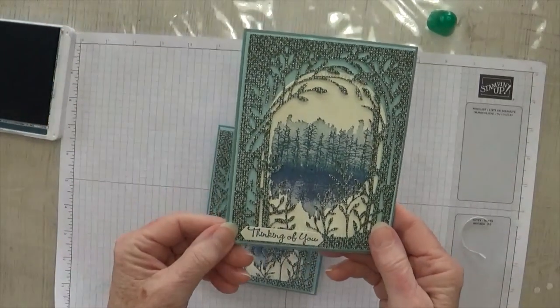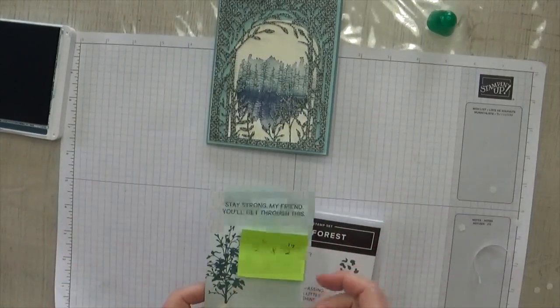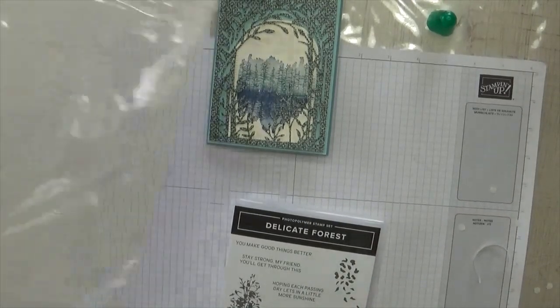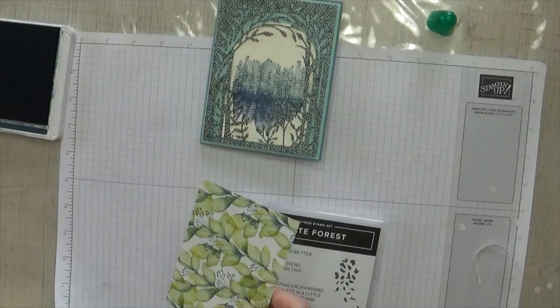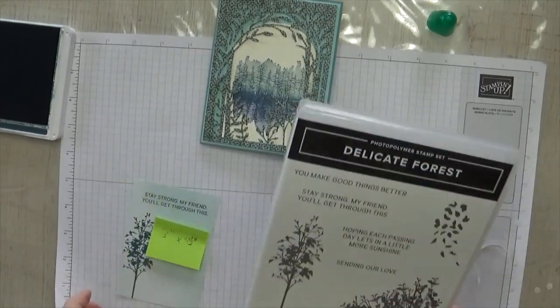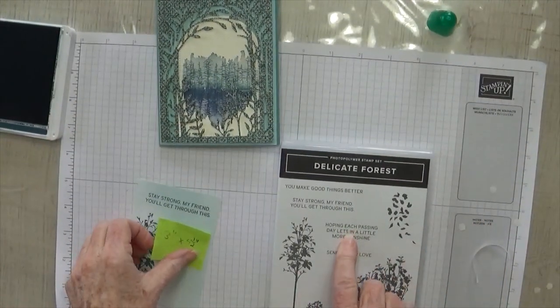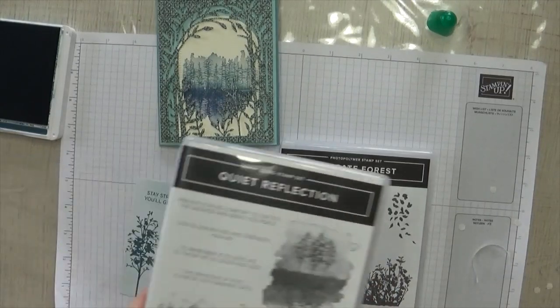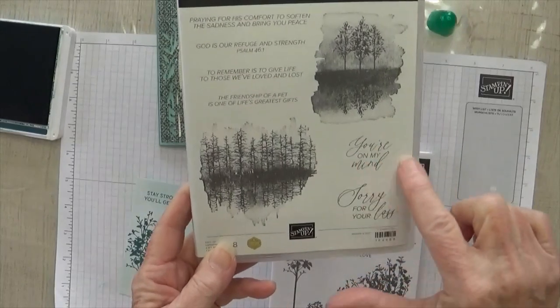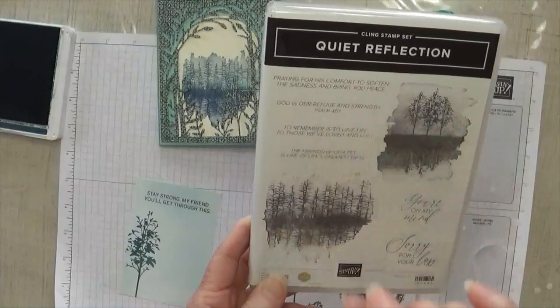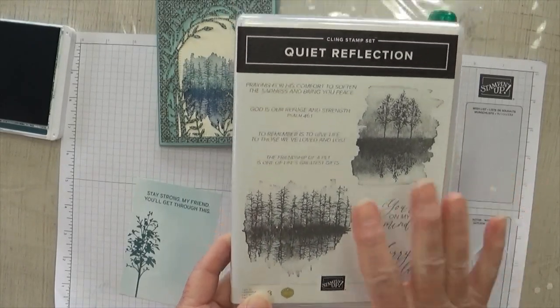There you go. Now you can put any little sentiment you want on it. I put a thinking of you on this one. And on the inside, I've started using my designer paper on the inside. And this is a three inch by four and a half inch piece. And it's actually from the delightful floral designer paper. It was this piece right here. And it was the back of that piece. So I stamped on it in pretty peacock with this delicate forest, which is the other part of the bundle with this die cut. So these two would go together in the bundle. And here's the tree and here's the sentiment. Stay strong. My friend, you'll get through this. Now I did like the sayings in quiet reflection. They're just kind of small, but there was a nice one for a pet. The friendship of a pet is one of life's greatest gifts. And I do like the sorry for your loss. These are kind of larger ones, but these really are tiny, but they're very nice. God is our refuge and strength, praying for his comfort to soften the sadness and bring you peace. To remember is to give life to those we've loved and lost. So this is really a very nice set.